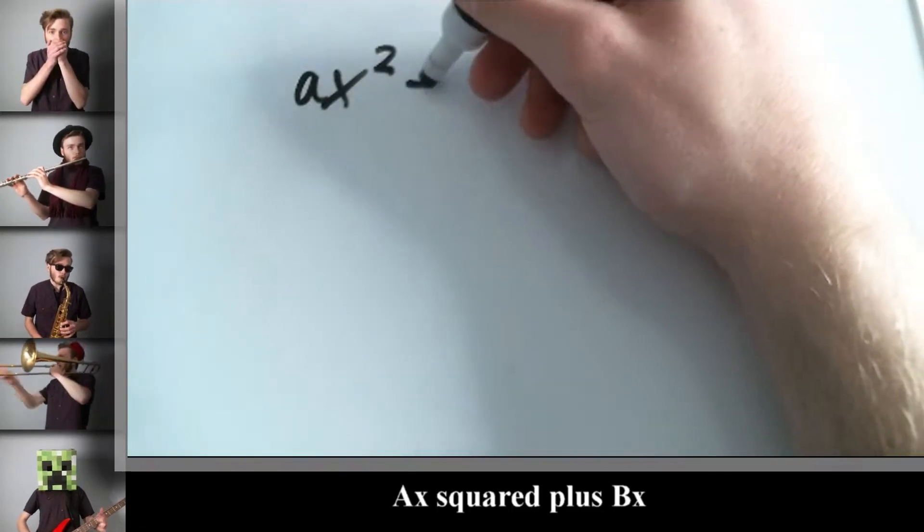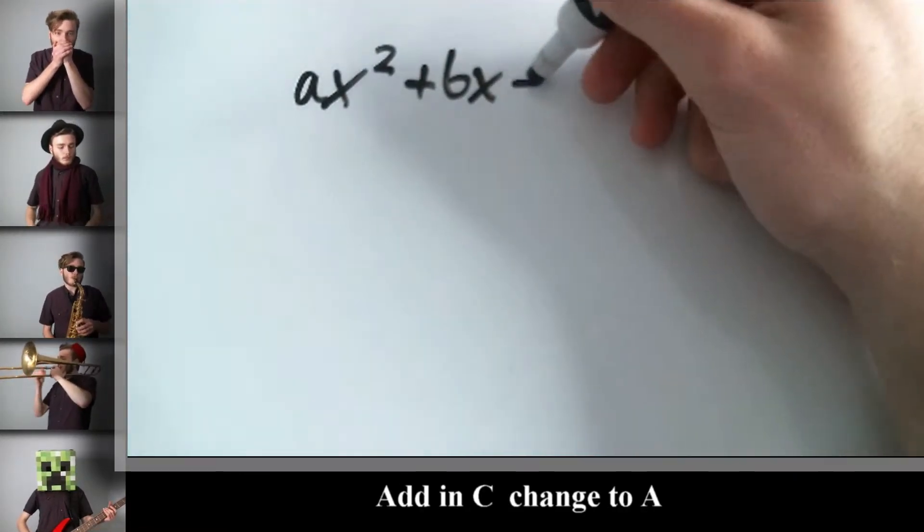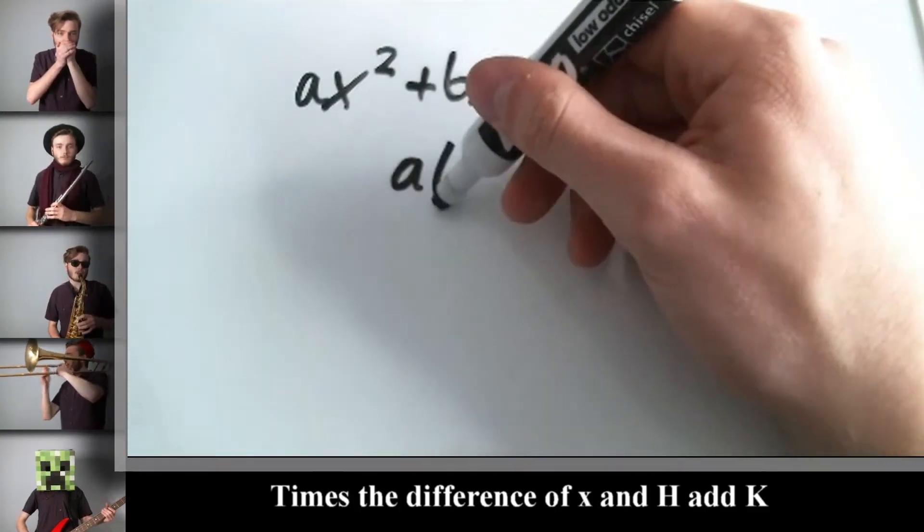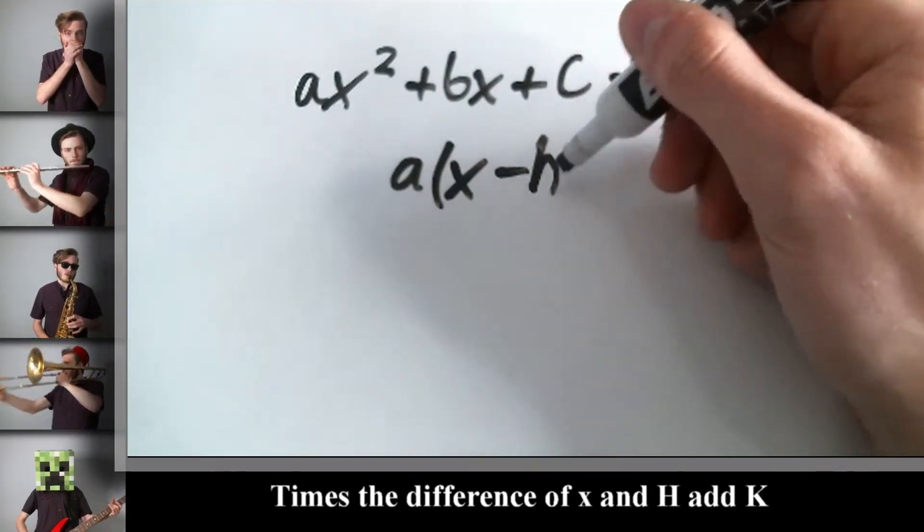ax squared plus bx add in c. Change to a times the difference of x and h, add k.